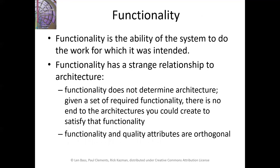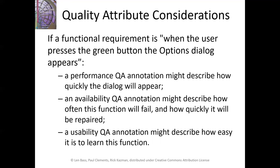Functionality is the ability of the system to do the work we intend. But there are many ways to design a system to achieve functionality, so architecture generally isn't what constrains your functionality. Instead, architecture is what enables us to achieve our quality attributes. For example, if our functional requirement is that when the user presses a green button the options dialog begins, then the quality attribute for performance describes how quickly the dialog appears, availability describes how often the function can fail and how quickly we can repair it, and a usability quality attribute might describe how easy it is to learn to press the green button.